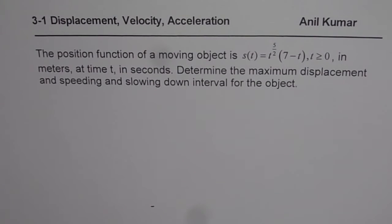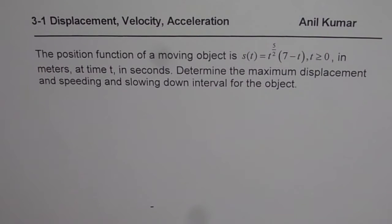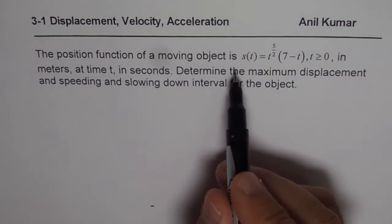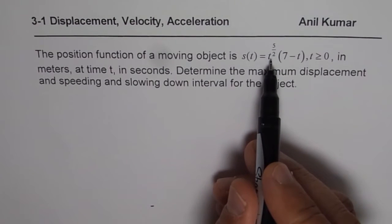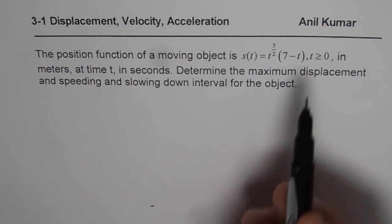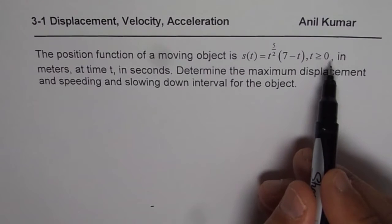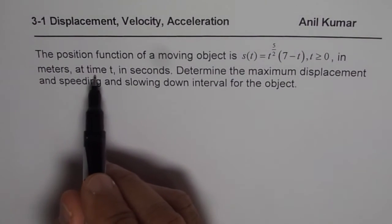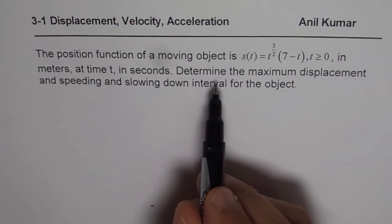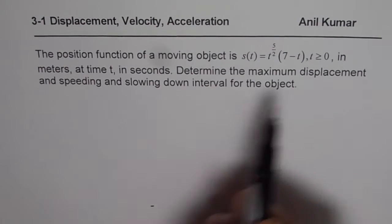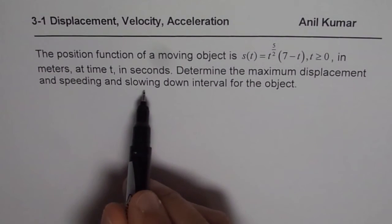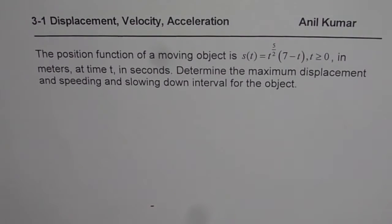I am Anil Kumar and in this video we will understand the relation between displacement, velocity, and acceleration when we have rational exponents in the given function. The position function of a moving object is s(t) = t^(5/2) * (7 - t), where t ≥ 0 in meters at time t in seconds. Determine the maximum displacement and the speeding and slowing down intervals for the object.